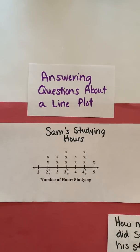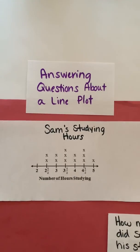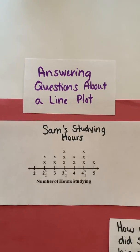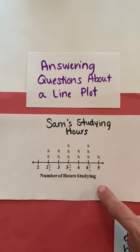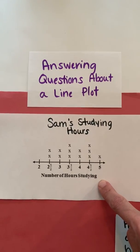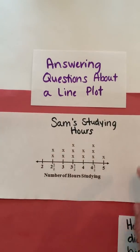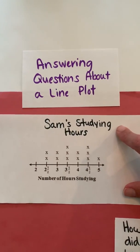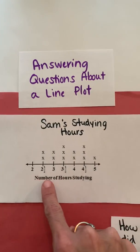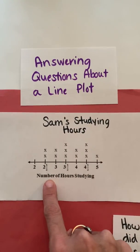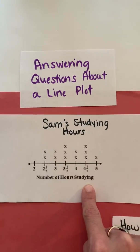This video will focus on answering questions about a line plot. Whenever we look at any type of graph we always want to make sure we look at the title and what the X and Y axes are labeled. Here we only have an X axis. The title of this line plot is 'Sam's Studying Hours' and the numbers along the X axis represent the number of hours Sam spent studying.